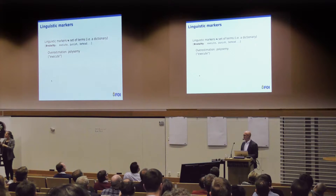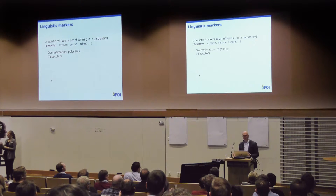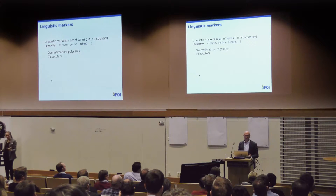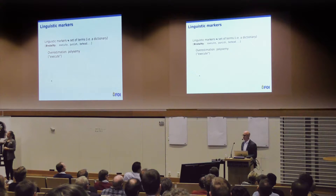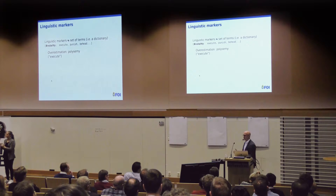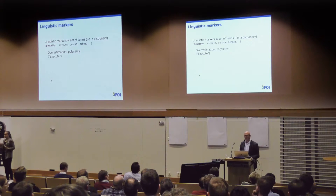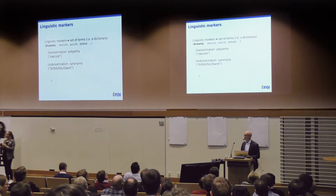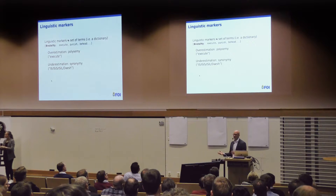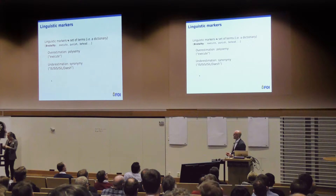This approach obviously has problems. When we just use keywords, we're going to overestimate warning behaviors because of the polysemy of words — one word can mean several different things depending on context. A word like 'execute' — we don't know if that means actually killing someone or carrying out a task. On the other hand, we also have the underestimation problem caused by synonymy or vocabulary variation: a large number of words can refer to the same phenomena. In the case of the Islamic State, you can use a wide range of terms referring to that organization.